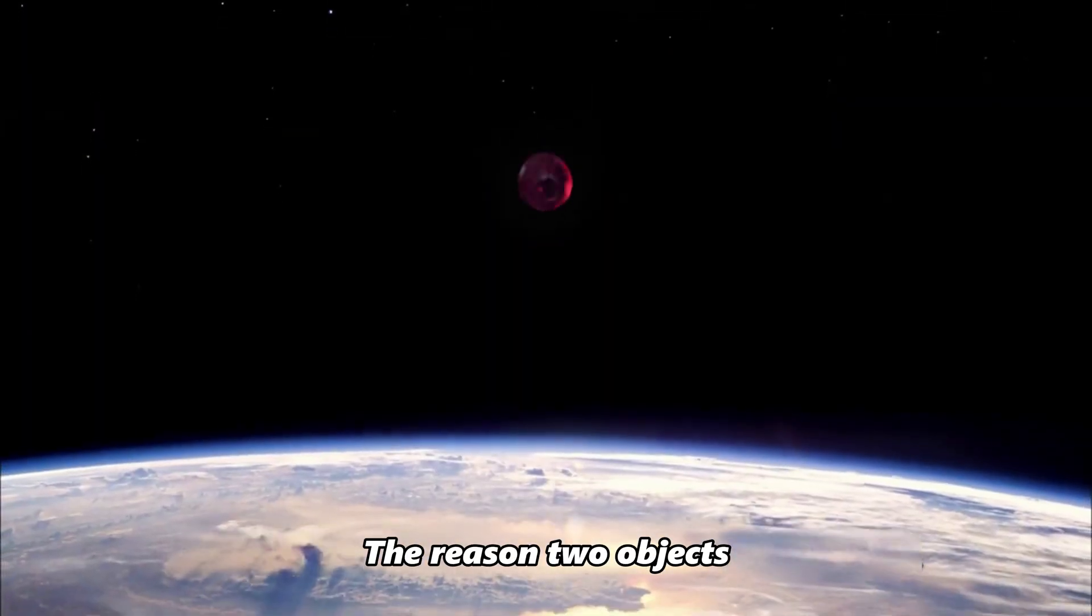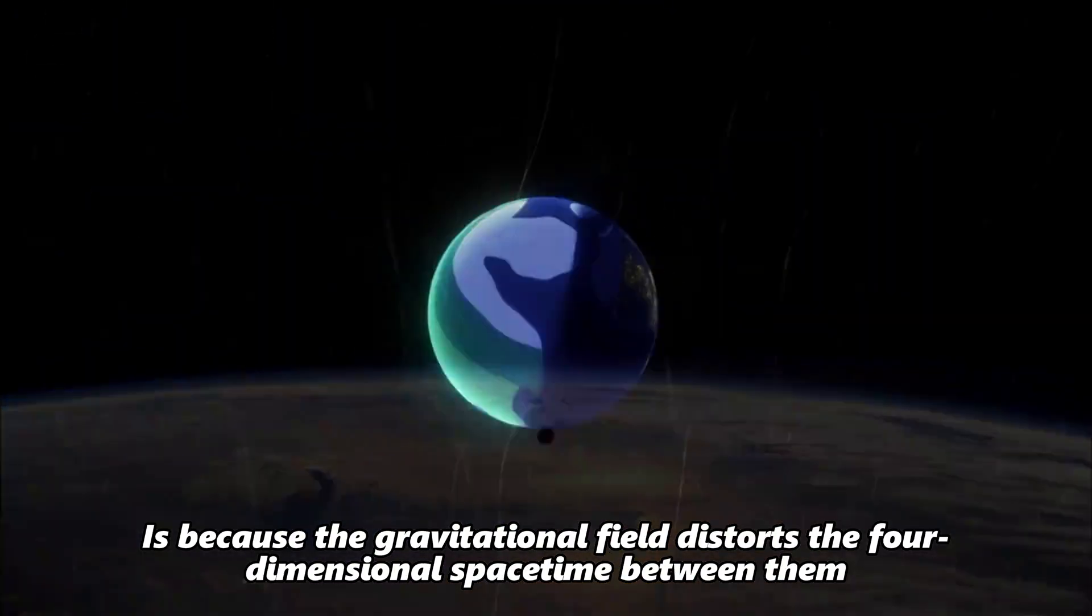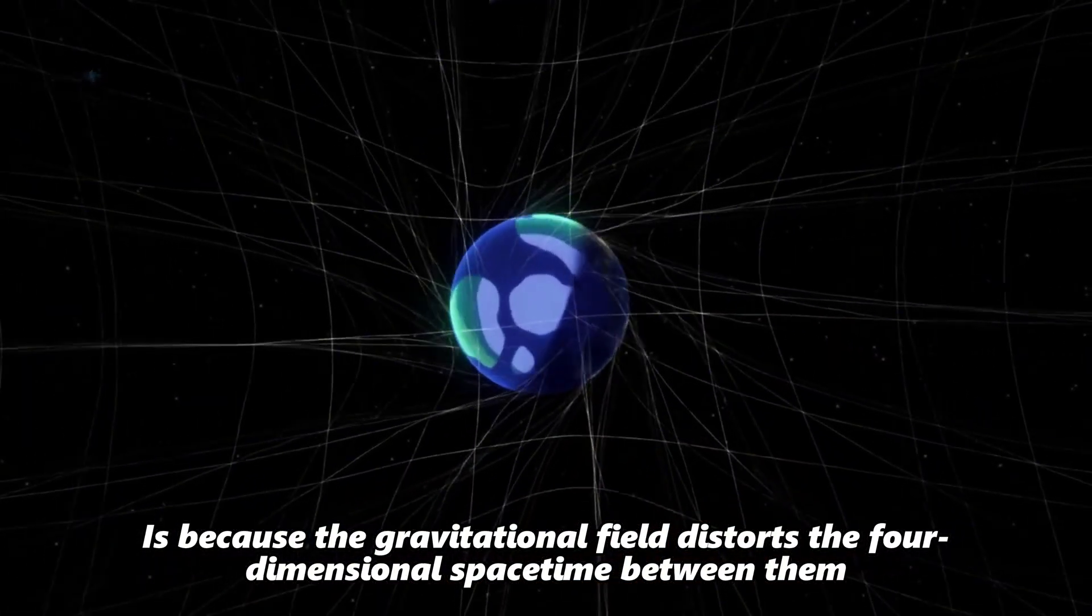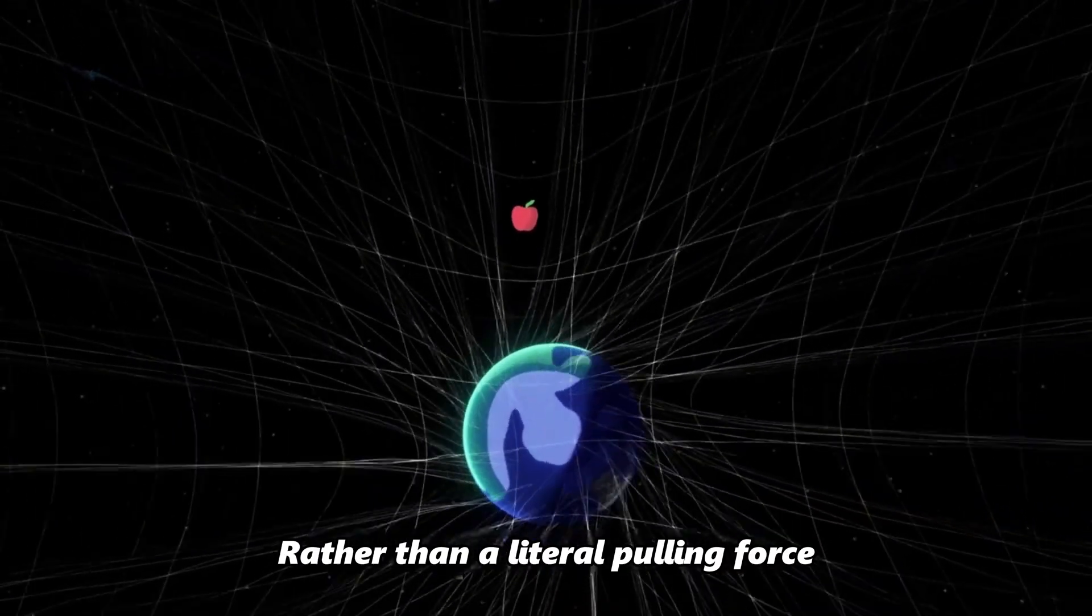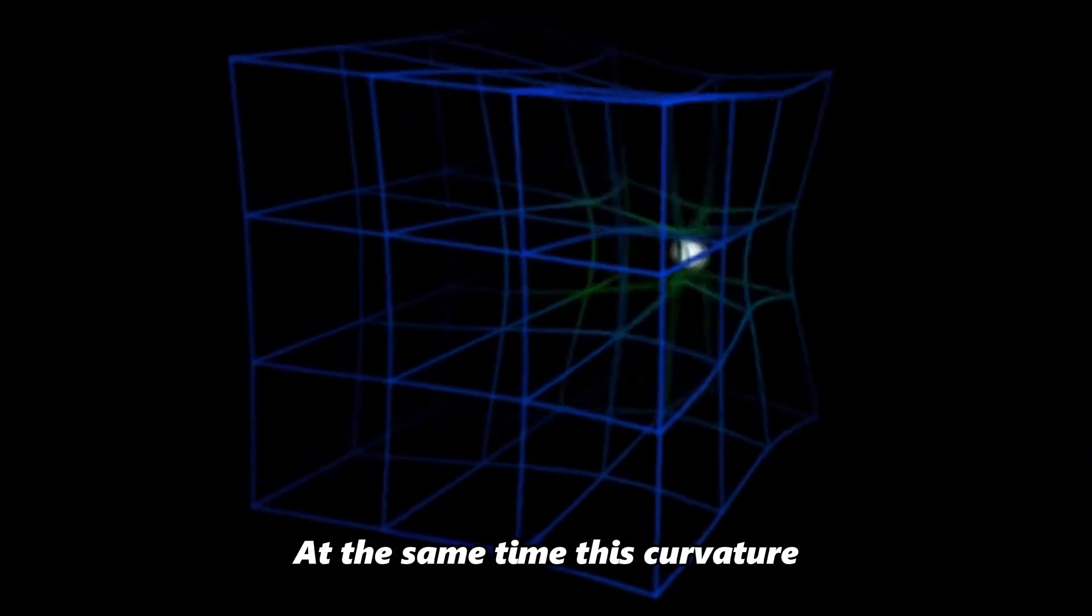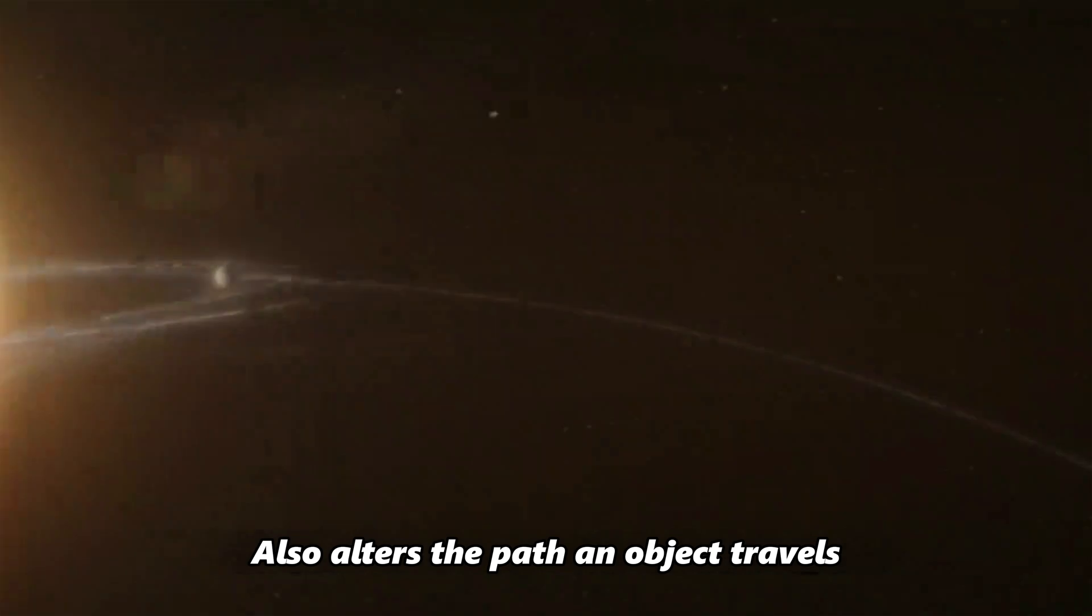The reason two objects seem to experience gravity is because the gravitational field distorts the four-dimensional spacetime between them rather than a literal pulling force. At the same time, this curvature also alters the path an object travels.